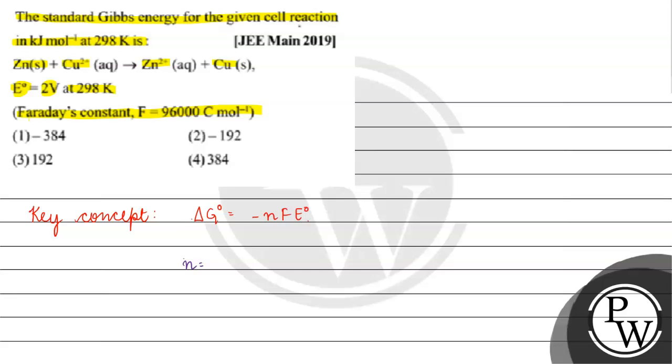We know n is the number of electrons exchanged. If we look at this reaction, we can see Zinc goes to Zinc 2+, so we have 2 electrons involved. Copper is 2+ and becomes just copper, so 2 electrons. How much is n? 2.